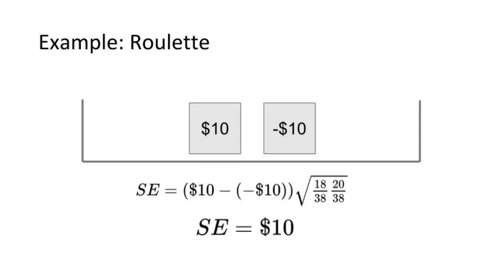For the roulette example, that's my higher value, $10, minus the smaller value, negative $10, times the square root of the two probabilities together. And that gets us a standard error of $10.